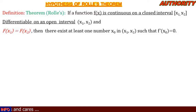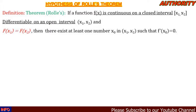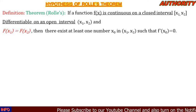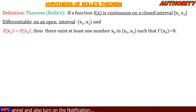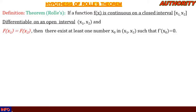If these three conditions are met, then there exists at least one number x naught in the interval (x1, x2) such that f prime of x naught is equal to zero. That means when you place that number into the derived function, it will give you zero.